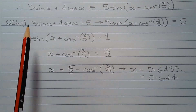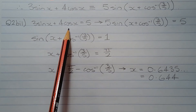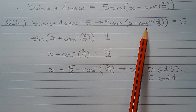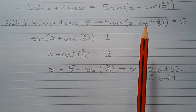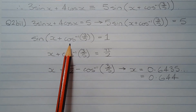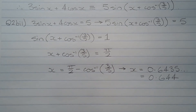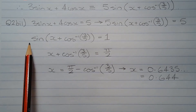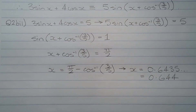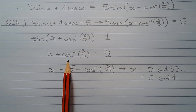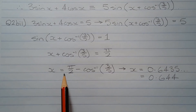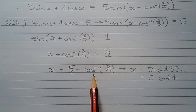From Part 1, solving 3 sin x + 4 cos x = 5 is equivalent to solving 5 sin(x + arccos(3/5)) = 5. Dividing both sides by 5 gives sin(x + arccos(3/5)) = 1. Taking the inverse sine of both sides gives x + arccos(3/5) = π/2. Subtracting arccos(3/5) from both sides gives x = π/2 − arccos(3/5).